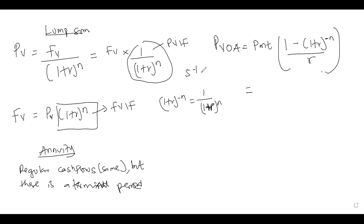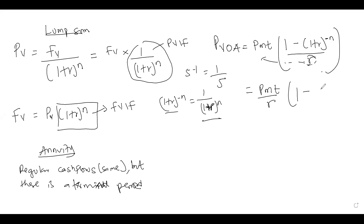So if you say (1 + r)^(−n), it is similar to 1 / (1 + r)^n — they are the same. For some books and even in your slides, they bring the r outside and write it as: Payment / r × [1 − 1/(1 + r)^n]. Mathematically it is the same thing — these two formulas are technically equivalent.